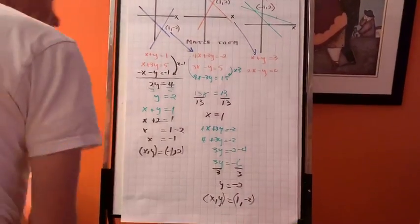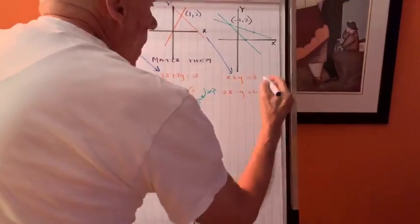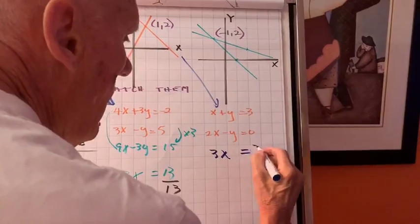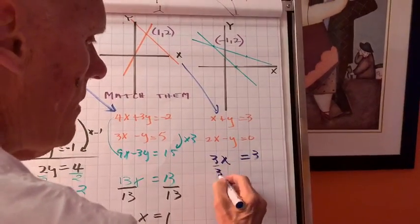Okay, this one's fast. All I have to do is add. 3x is 3. Divide by 3. X is 1.